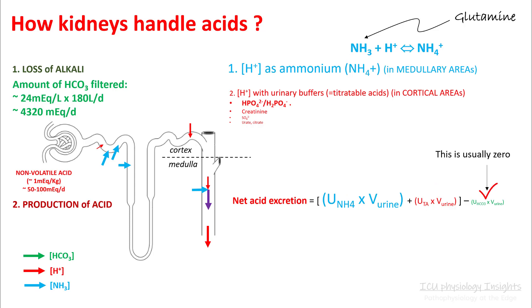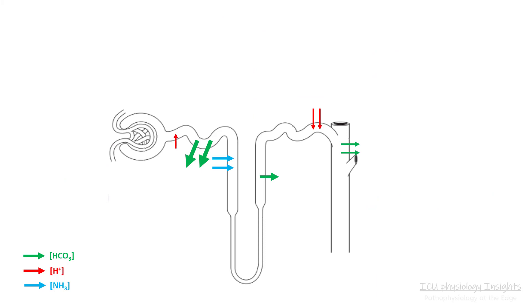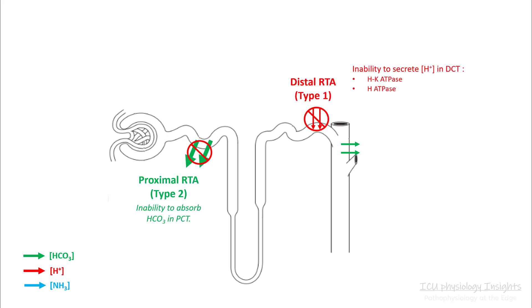Your net acid excretion is the amount of acid excreted as ammonia plus the amount excreted as titratable acid, minus the amount of bicarb lost through urine. Out of the ways things can go wrong in the kidneys, only three are important: a problem with bicarb absorption in the proximal convoluted tubule — proximal RTA or type 2; inability to secrete hydrogen ions in the DCT — distal RTA or type 1; and aldosterone resistance — RTA type 4.